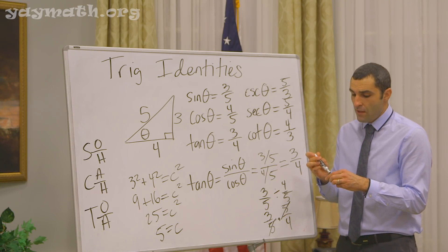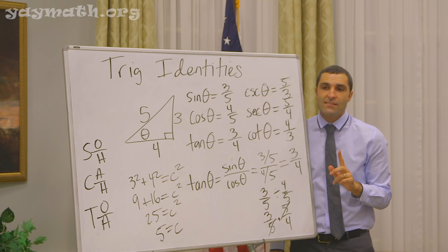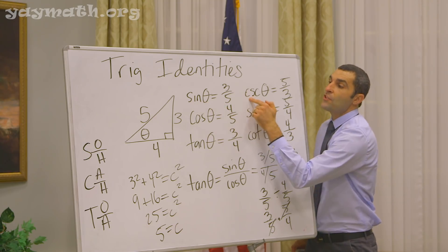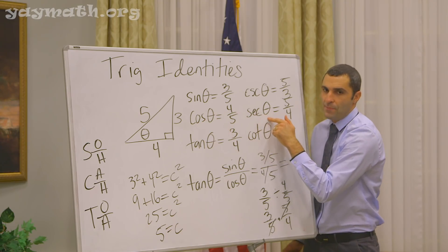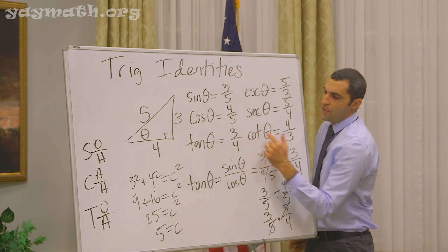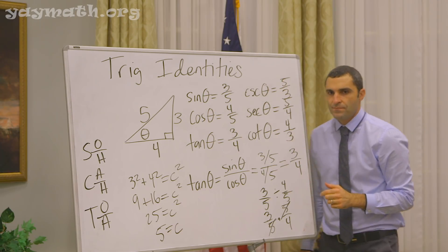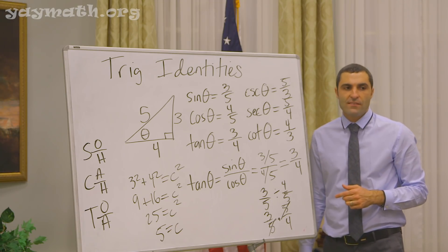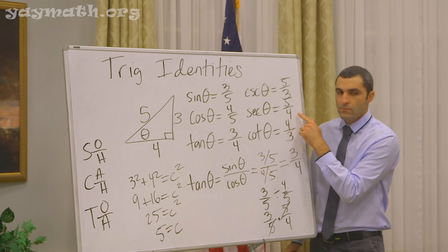A brief reminder: whenever you're trying to recall what the reciprocal function pairs are, for every pair there's one pilot and one co-pilot. Sine and cosecant — here's your co. Cosine and secant — the S is secant. And then tangent and cotangent — that's the easiest one to remember.